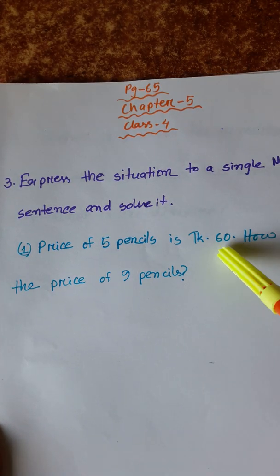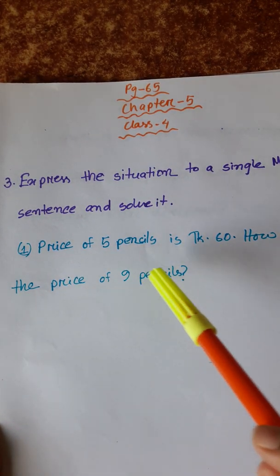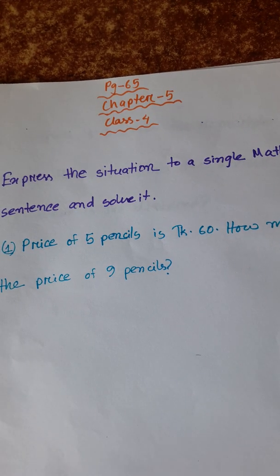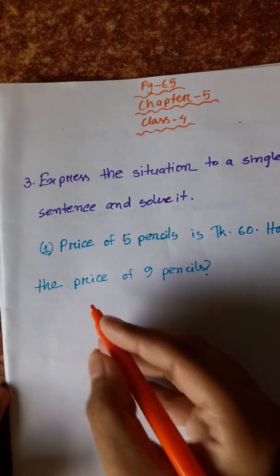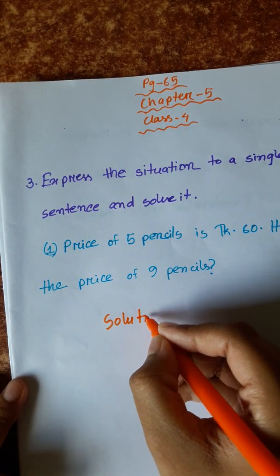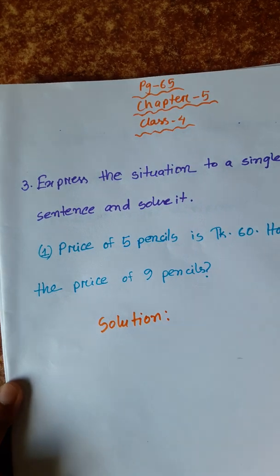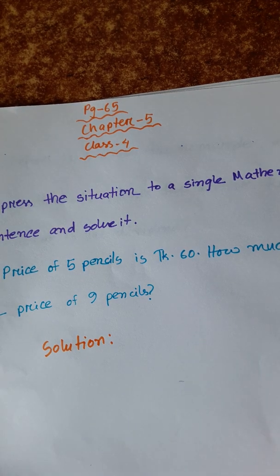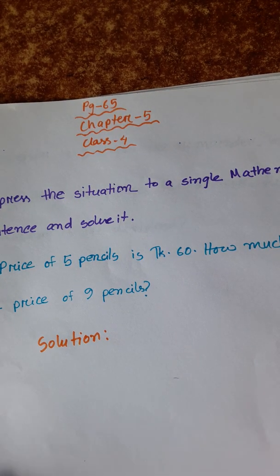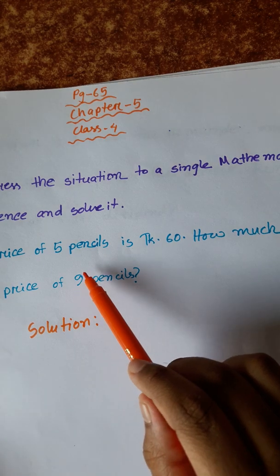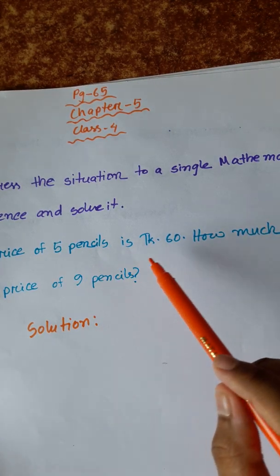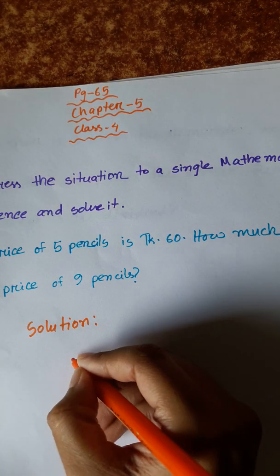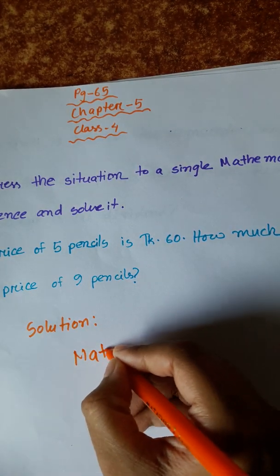5 pencils is Taka 60. How much is the price of 9 pencils? We will first find the price of 1 pencil. Since 5 pencils is Taka 60, we will find the price of 1 pencil and then read the mathematical sentence.